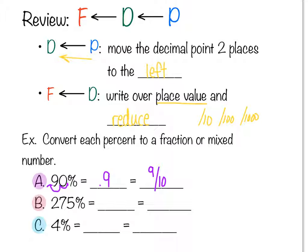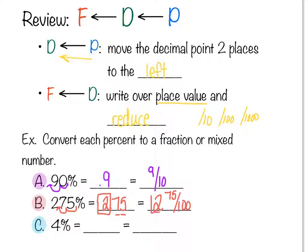For example B, 275 percent — move the decimal point backwards two spots and that makes it 2.75. The 2 in front becomes the whole number part of a mixed number. We only work with the .75 part: it has two decimal places so we put 75 over 100. Don't put 275 over 1000. The 2 goes in front of the fraction.